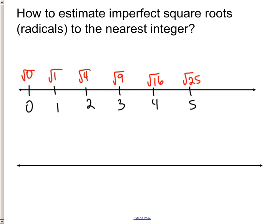Now, these are perfect square roots, perfect radicals, and we're not really interested in that. We want to find out how we can estimate imperfect square roots to the nearest integer. But if we take the time to see how a number line is put together with perfect and imperfect square roots, it can make that a lot easier.